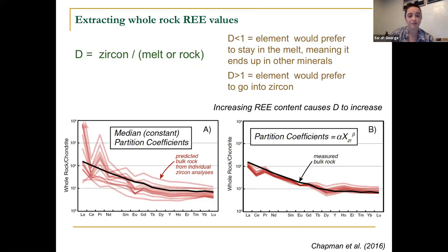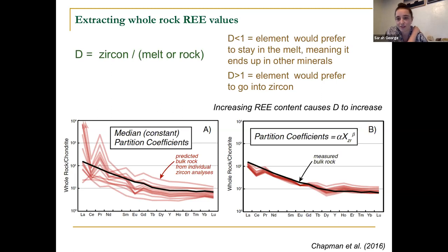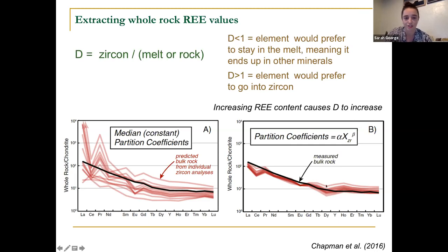Once you have a trace element chemistry in a zircon, this is some really neat work from Jay Chapman, where he's come up with a way to use those trace element chemistries to get back at a whole-rock composition. In this diagram on the right-hand side, the red lines are reconstructed approximate whole-rock compositions and the black line is the measured whole-rock composition — so the red lines are reconstructed from zircon and the black line is just measured. To do this you need to know your partition coefficients between the zircon and the melt, but he's come up with a way to estimate this in most rock types.